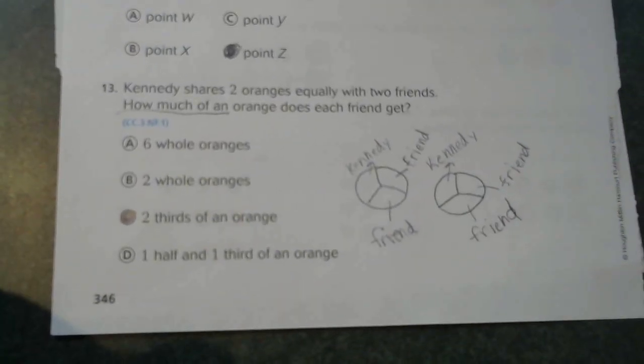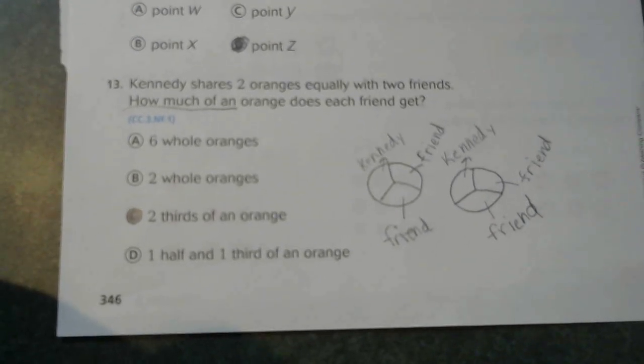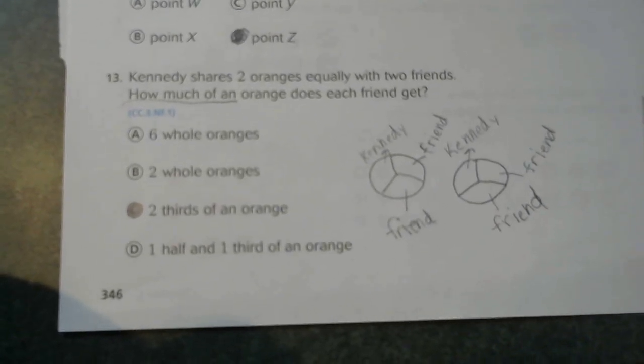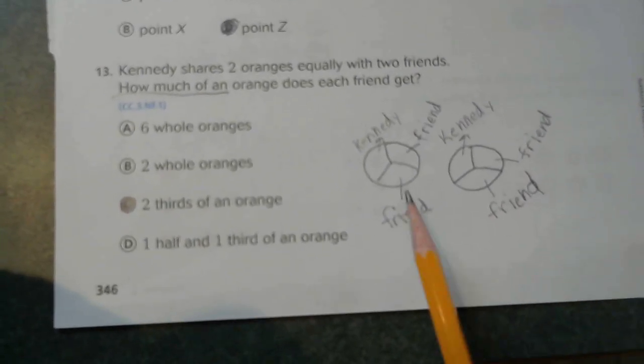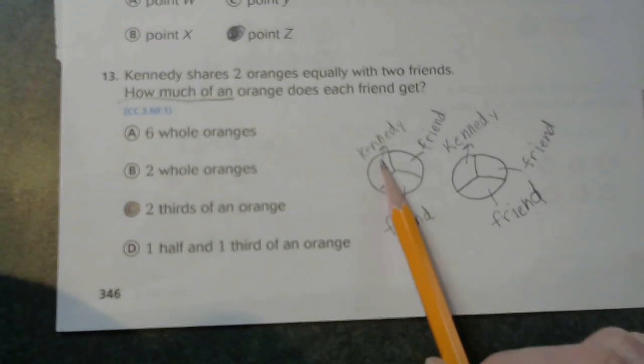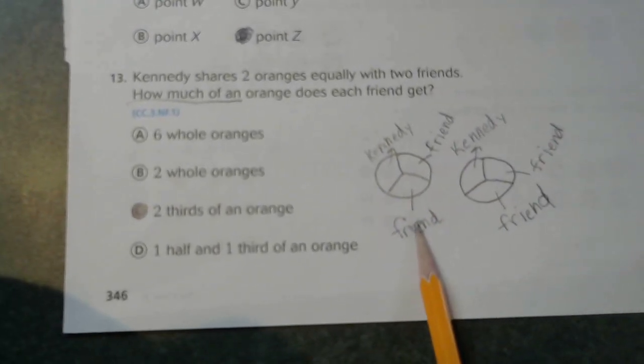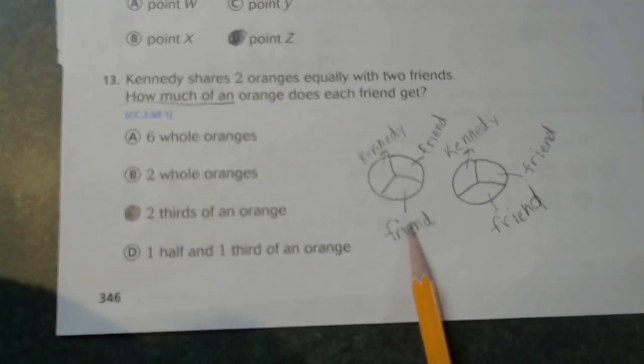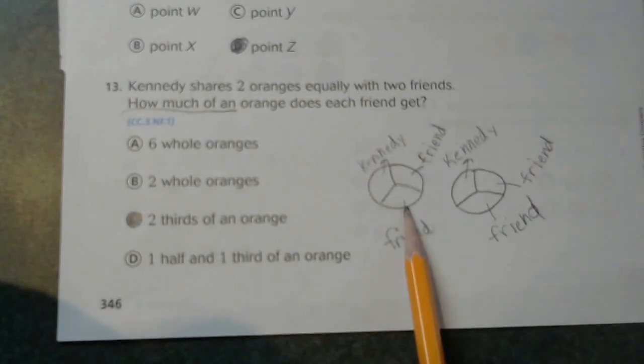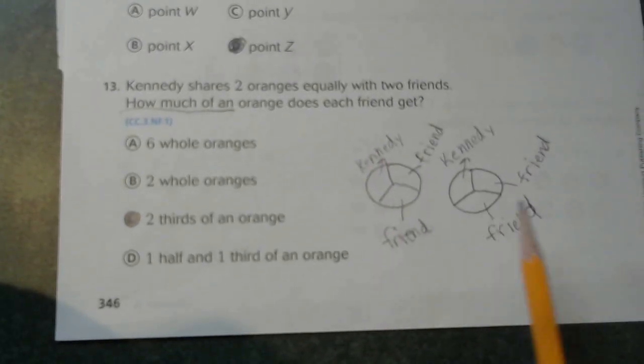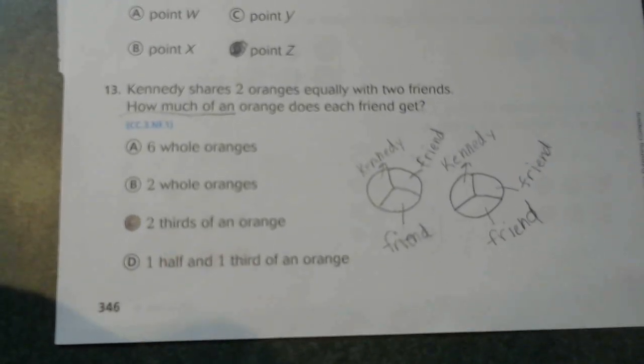Kennedy shares two oranges equally with two friends. How much of an orange or one orange does each friend get? I drew my two oranges and I broke them up into thirds. There's Kennedy's and there's one friend and there's the other friend. So it looks like each friend gets two-thirds of an orange.